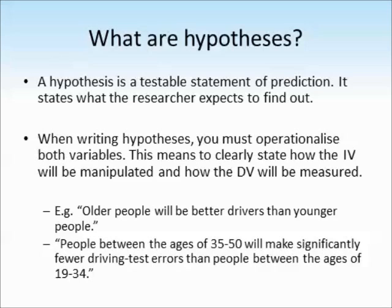Here's a much better example of this same hypothesis, which has been fully operationalised: 'People between the ages of 35 and 50 will make significantly fewer driving test errors than people between the ages of 19 and 34.' The word 'significant' in the hypothesis just means that the difference between those two groups has to be statistically significant.